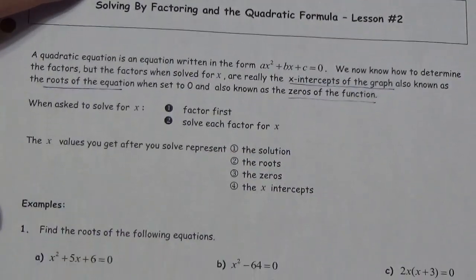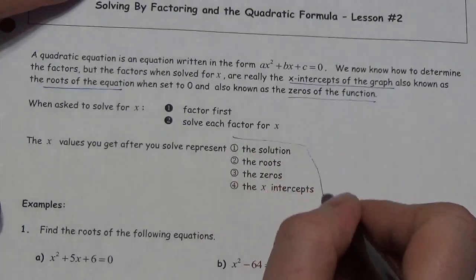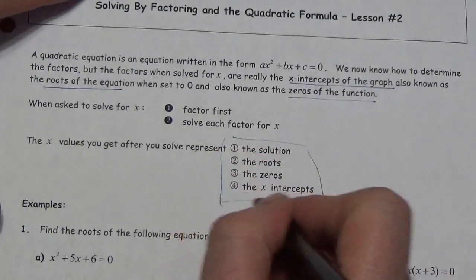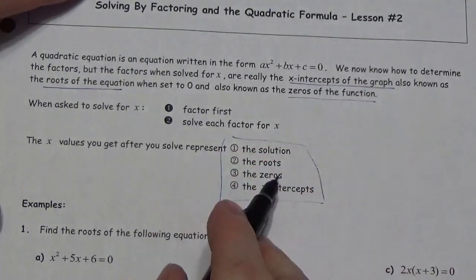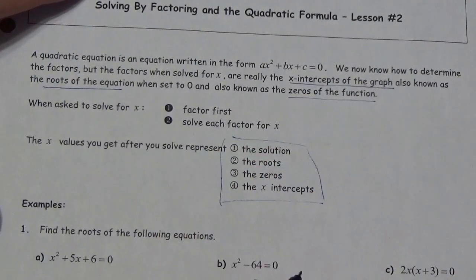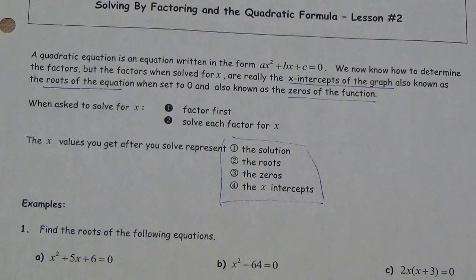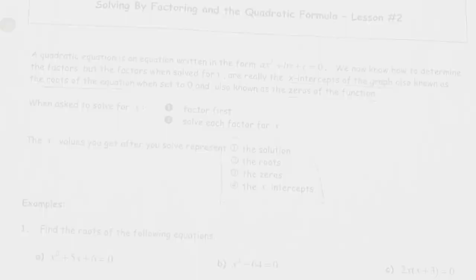The solution of the equation, the roots of the equation, the zeros of the function, and the x-intercepts of the graph are just three different ways of looking at and interpreting the exact same thing. Let's jump right in and see what we can do.